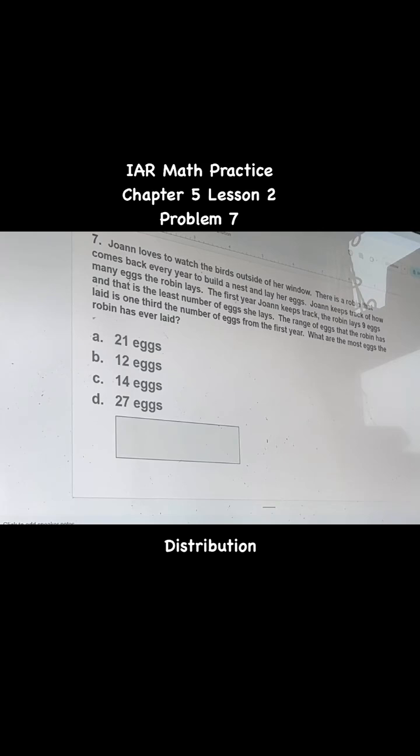The first year Joanne keeps track, the robin lays nine eggs, and that is the least number of eggs she lays. The range of eggs that robin has laid is one-third the number of eggs from the first year. What are the most eggs the robin has ever laid?